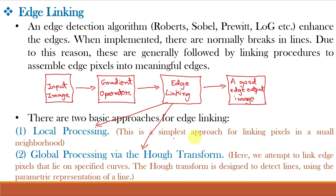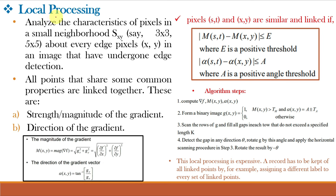Local processing is the simplest approach for linking pixels in a small neighborhood. For global processing via the Hough transform, we attempt to link edge pixels that lie on specified curves. The Hough transform is designed to detect lines using the parametric representation of a line. In local processing, suppose two edges of a box are disjoint. The simplest method is to consider a neighborhood of pixels and check whether they share common properties — the strength or magnitude of the gradient and the direction of the gradient.